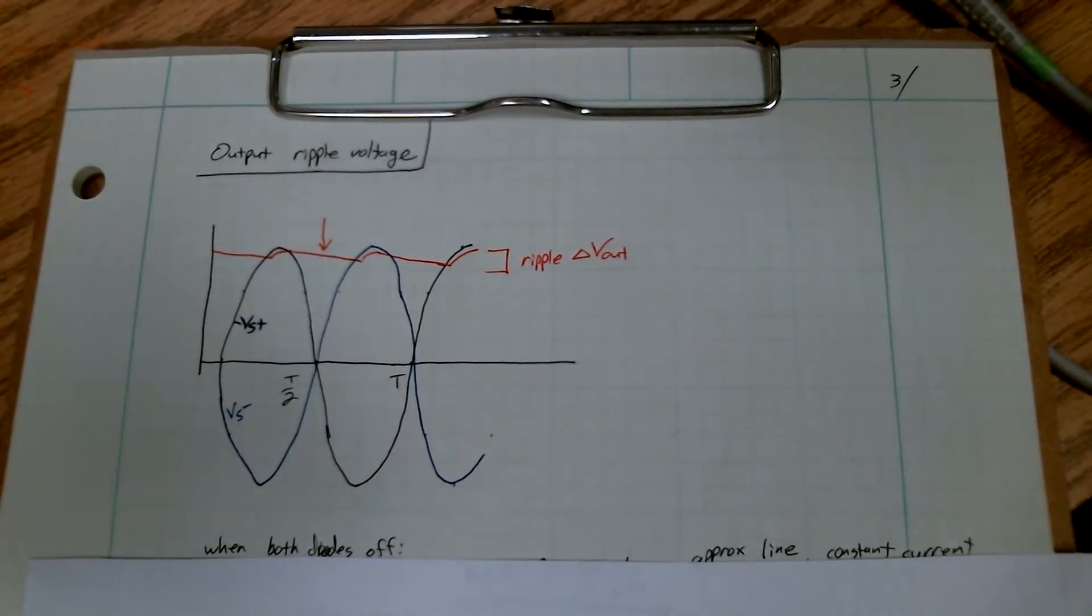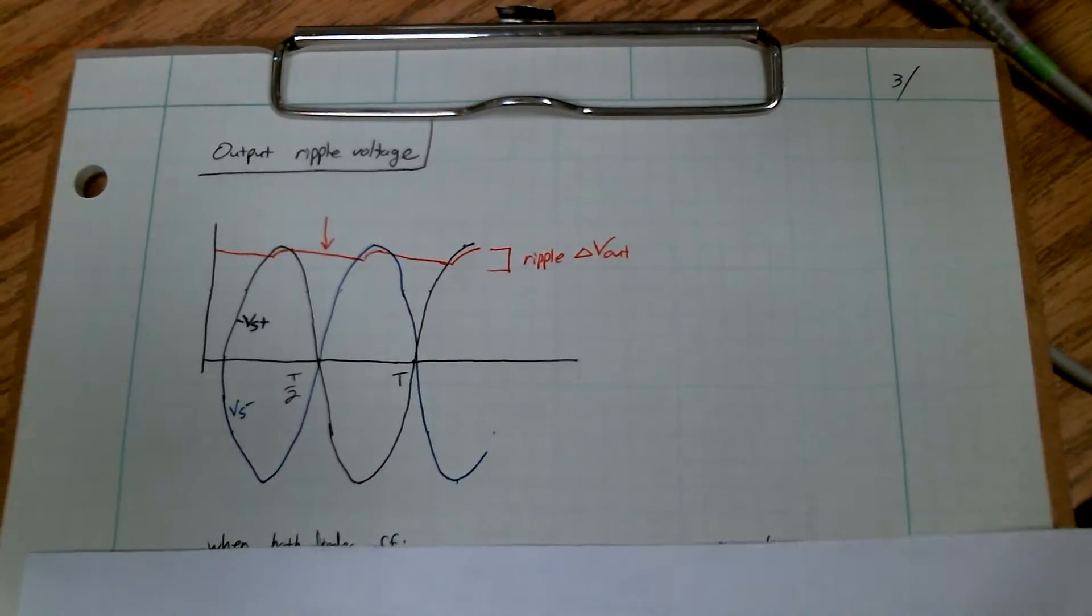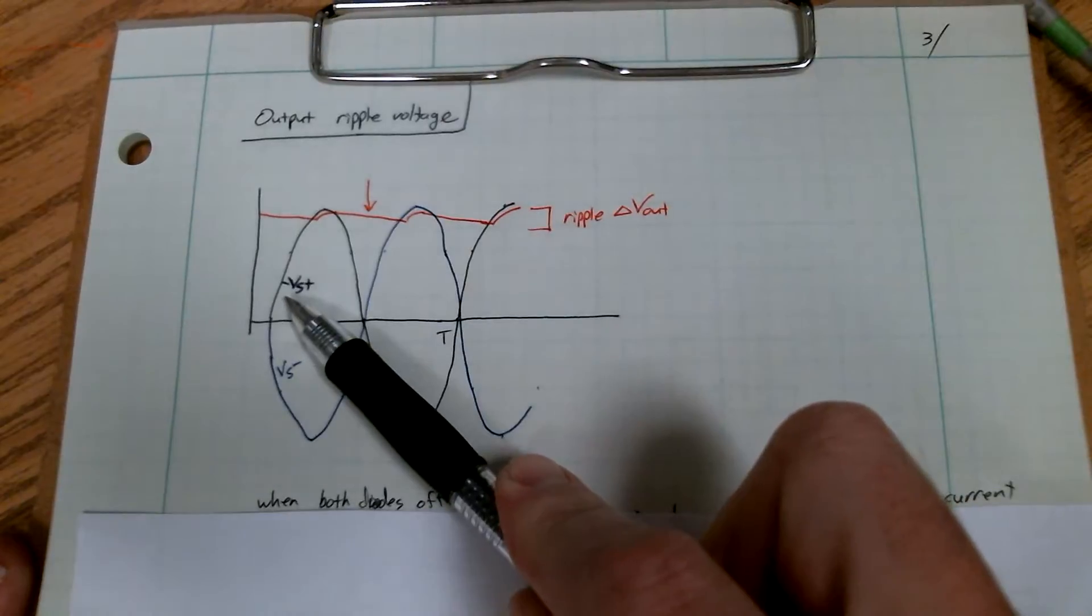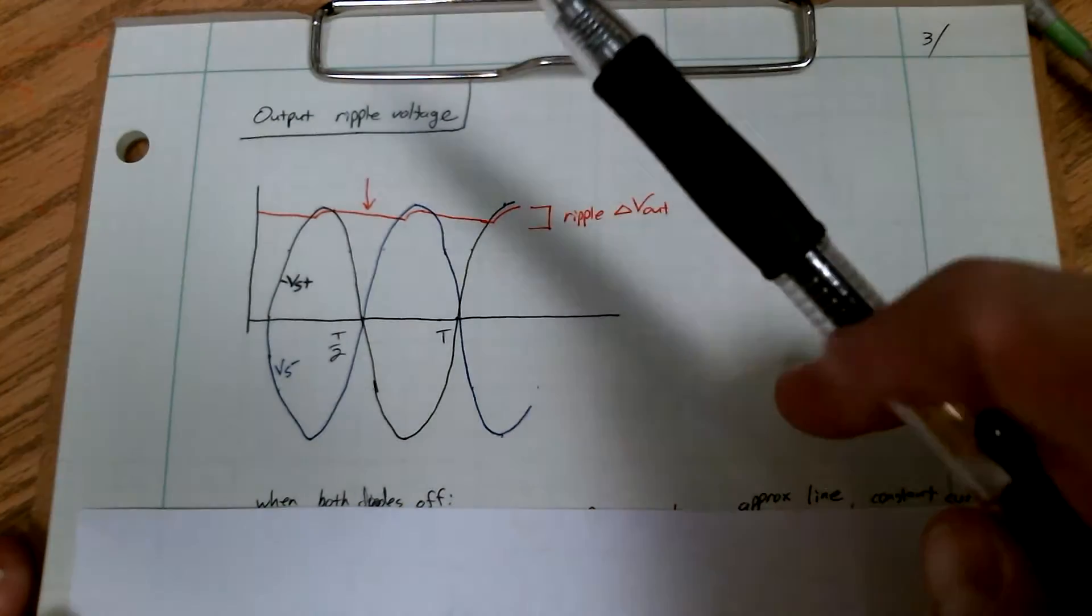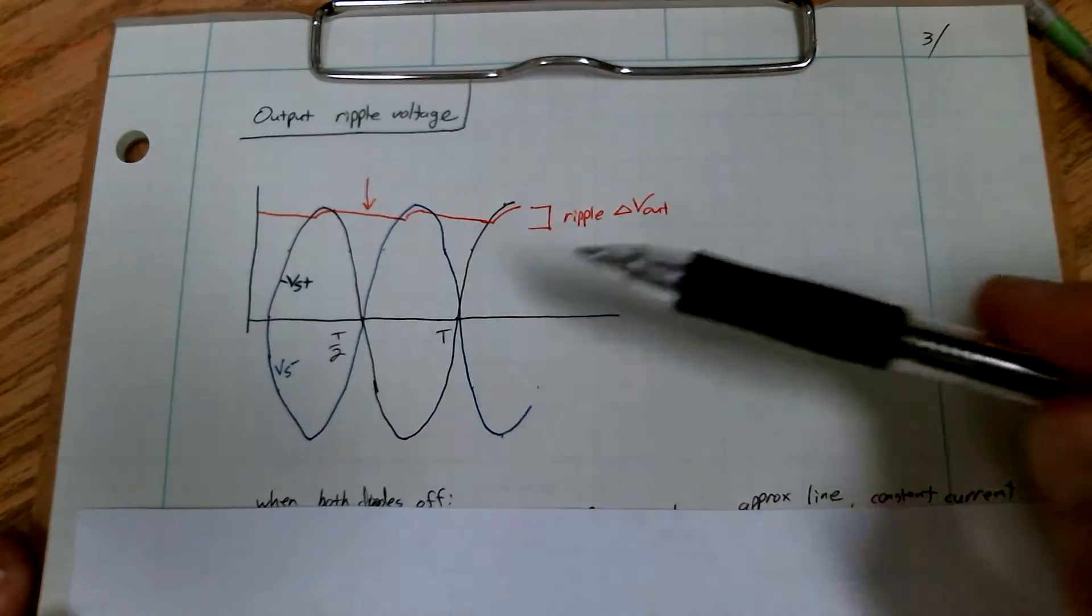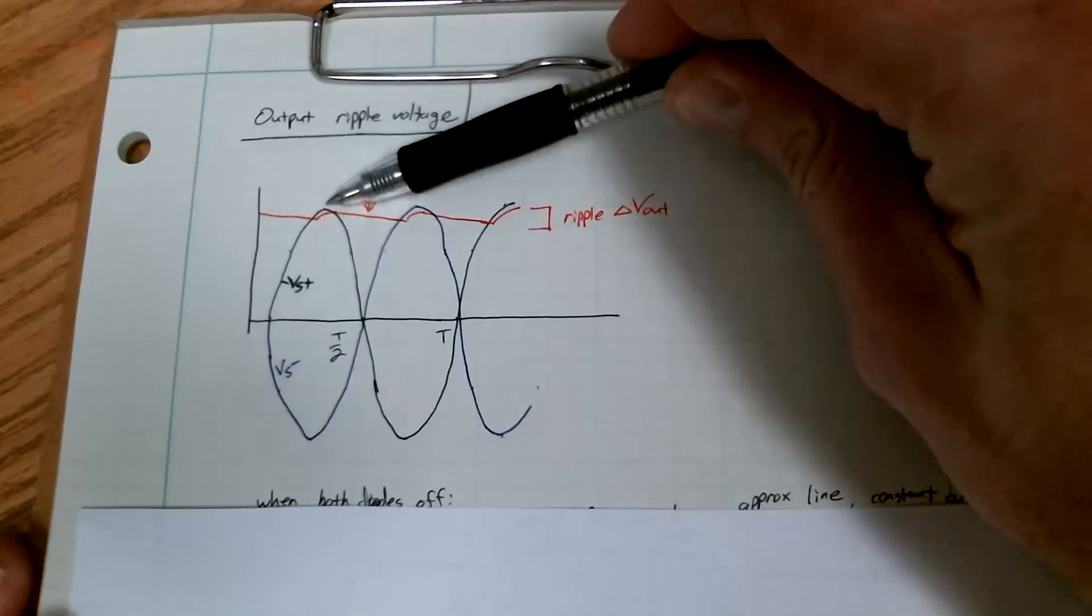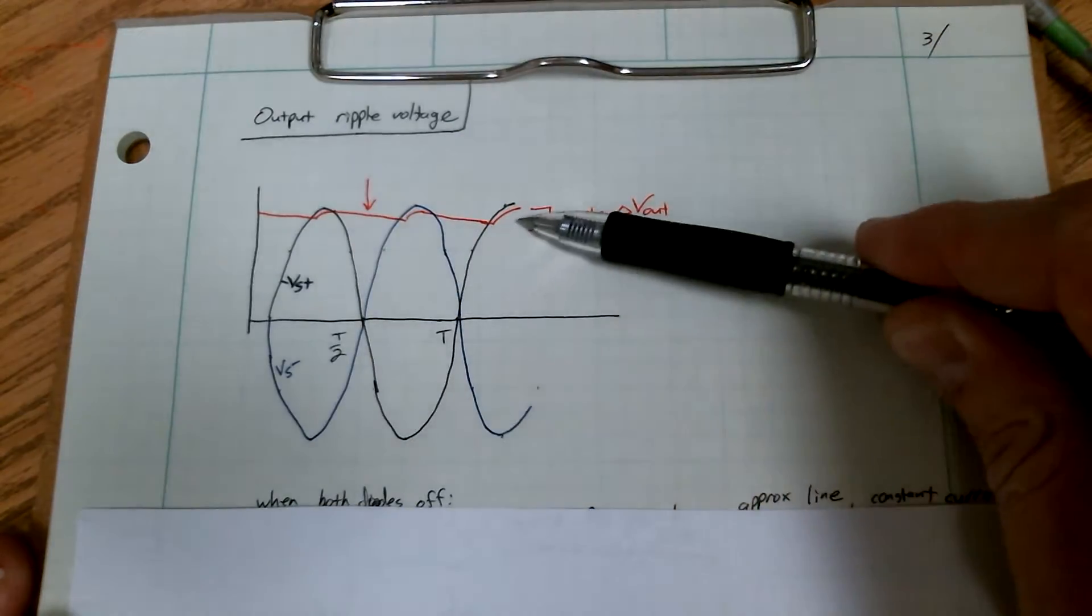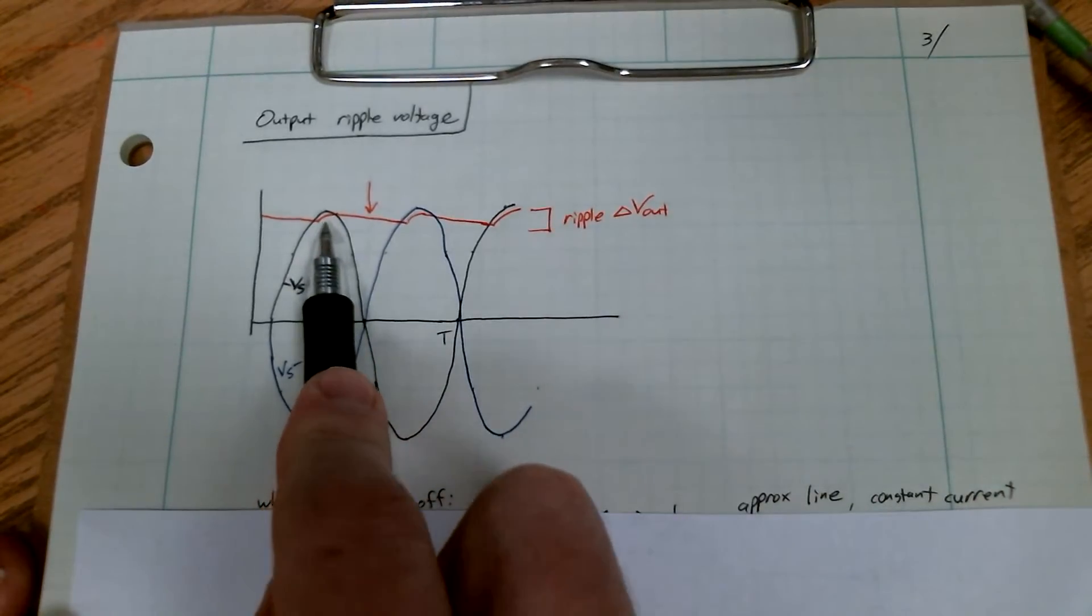Okay, for the third part we're going to look at the ripple on the output voltage. What's going on here is we have a split secondary transformer, so there's two diodes and the secondary has two output waveforms. The black line is a bad choice of color, but the secondary waveform we've been looking at is just this one. The black line goes up and down - that's our secondary waveform.